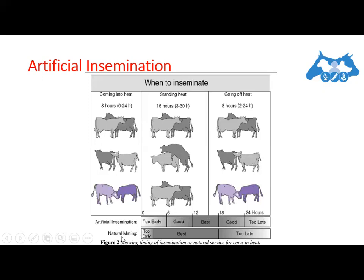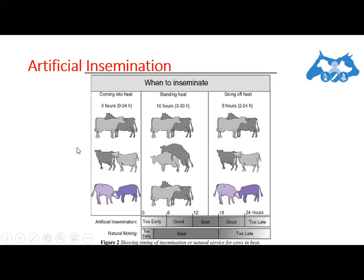Comparing with natural mating: in the first 3 to 4 hours it is too early, but the best time is from about 4 to 18 hours, during which natural mating gives the best results in terms of reproductive efficiency. After 18 hours it is very late and you cannot get the best results.